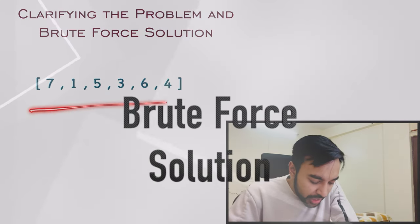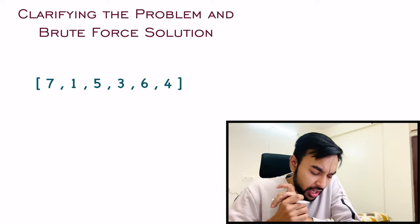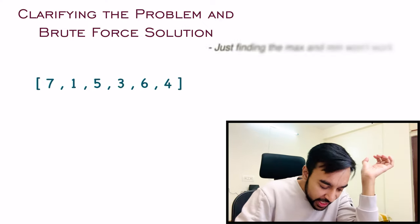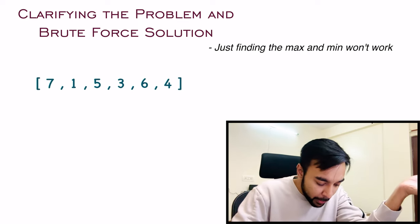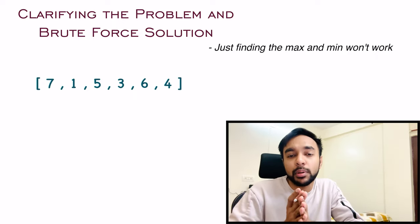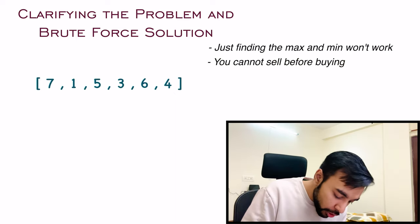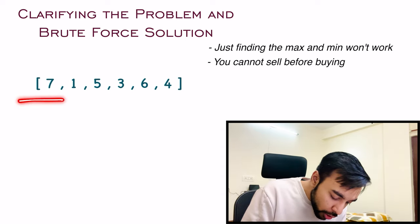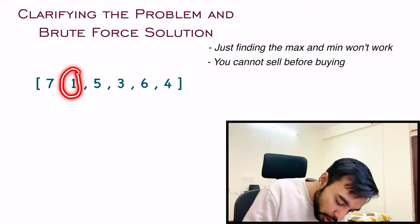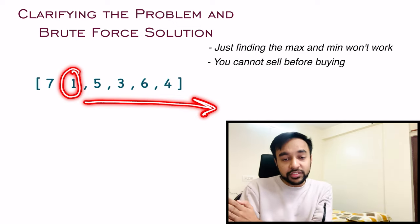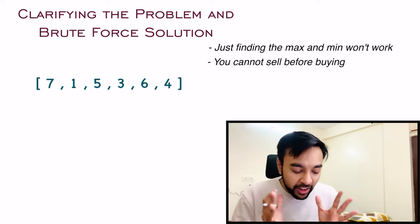So let us say I have this sample array and I have to determine the maximum profit possible. You might think that to maximize profit, you can just take the largest value and the minimum value — that gives 7-1, which is 6, and this seems like the maximum profit. But there is a caveat: you cannot sell a stock before buying it. So if you want to buy the stock at price 1, you cannot go back in time to sell the stock at price 7 — that would be invalid. If you're buying at price 1, you can only sell on consecutive upcoming days.